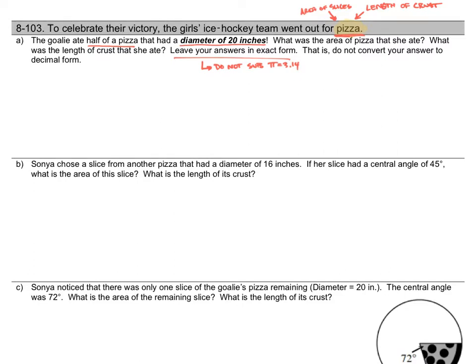So let's go ahead and sketch a circle here just to help us out. We're told that this pizza has a diameter of 20 inches, which means that the radius is 10 inches. It is really important that you pay attention to the difference between diameter and radius. I prefer to work with the radius, so I always like to convert diameter to radius before I get started.